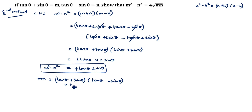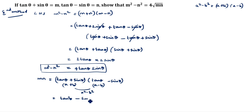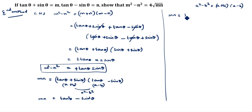This is (a + b)(a - b) = a² - b², so mn = tan²θ - sin²θ. We write tan²θ = sin²θ / cos²θ. So mn = sin²θ / cos²θ - sin²θ. Factoring out sin²θ: mn = sin²θ · (1/cos²θ - 1).